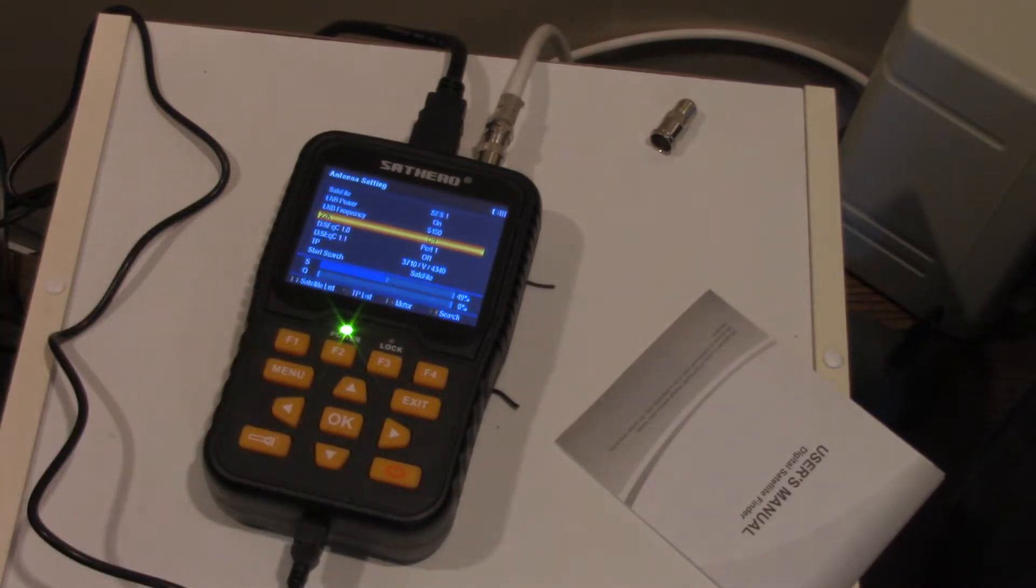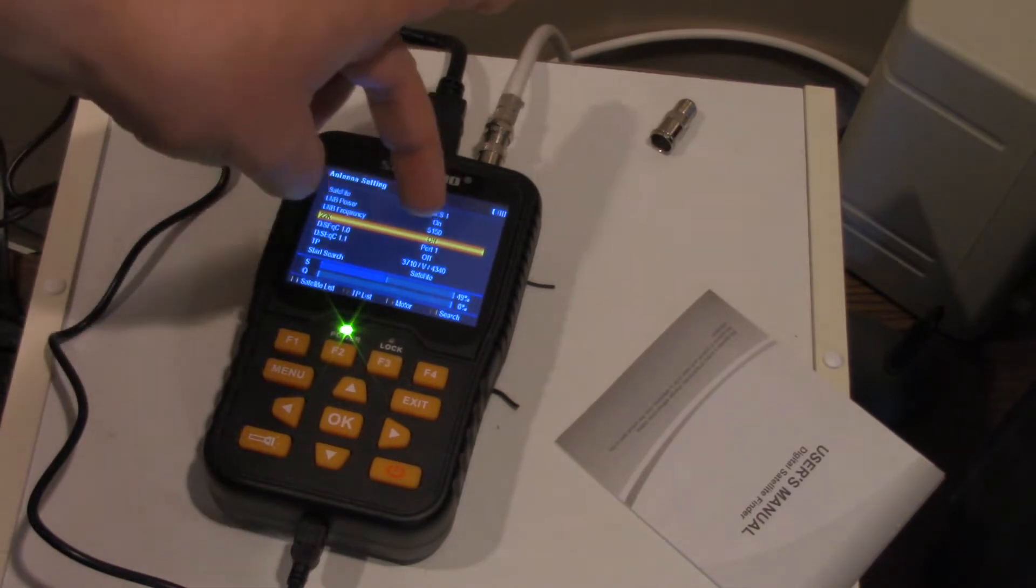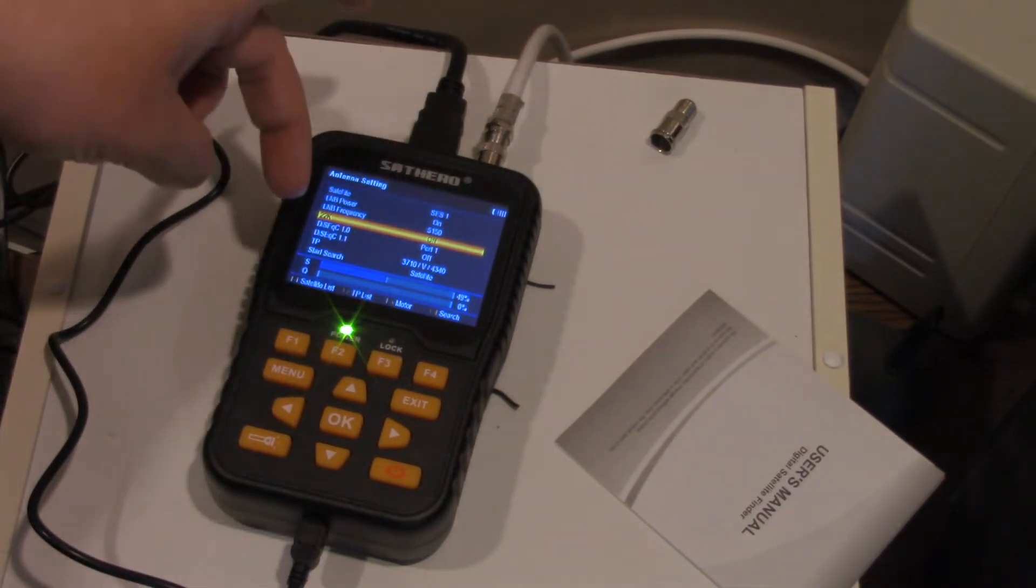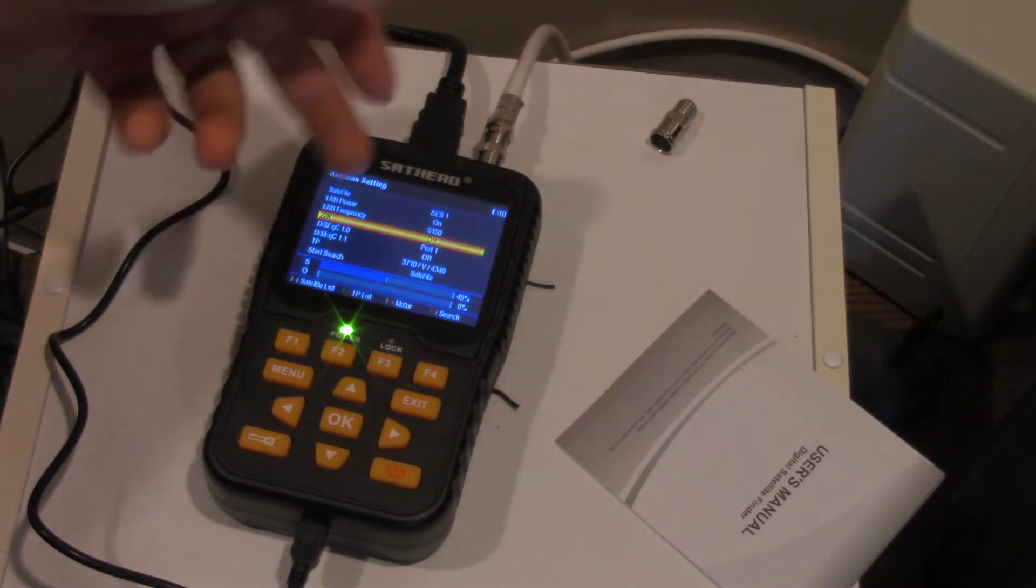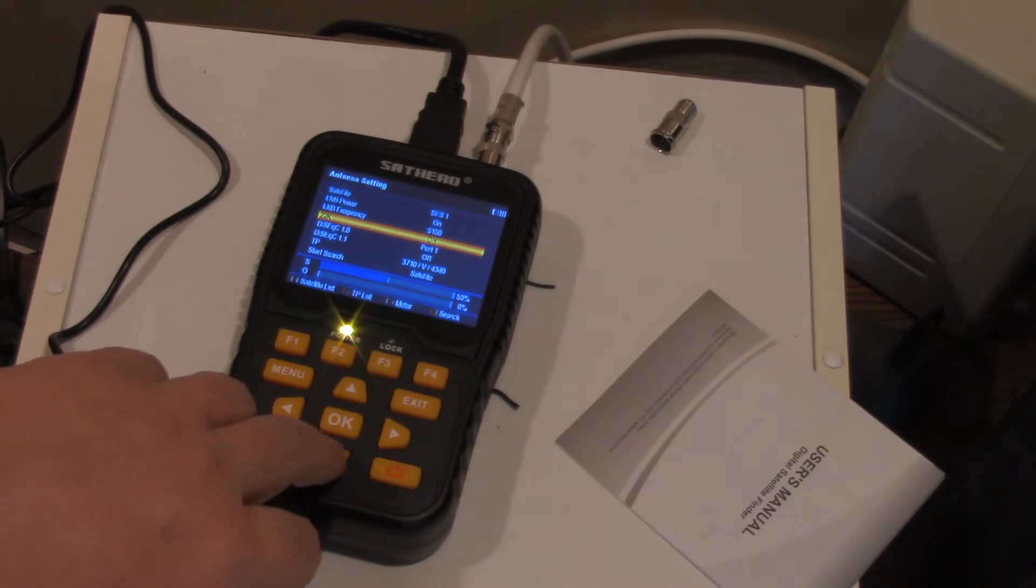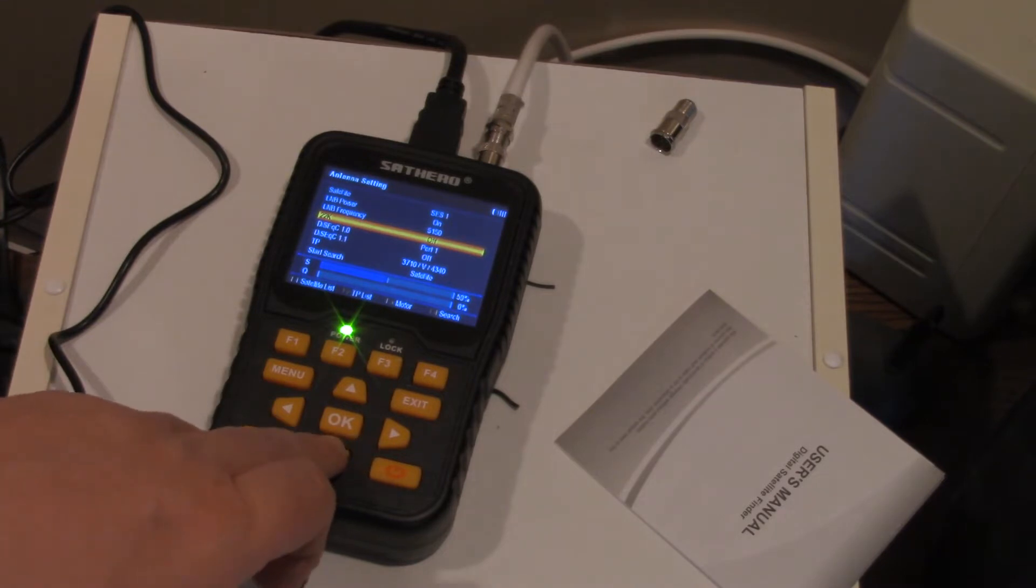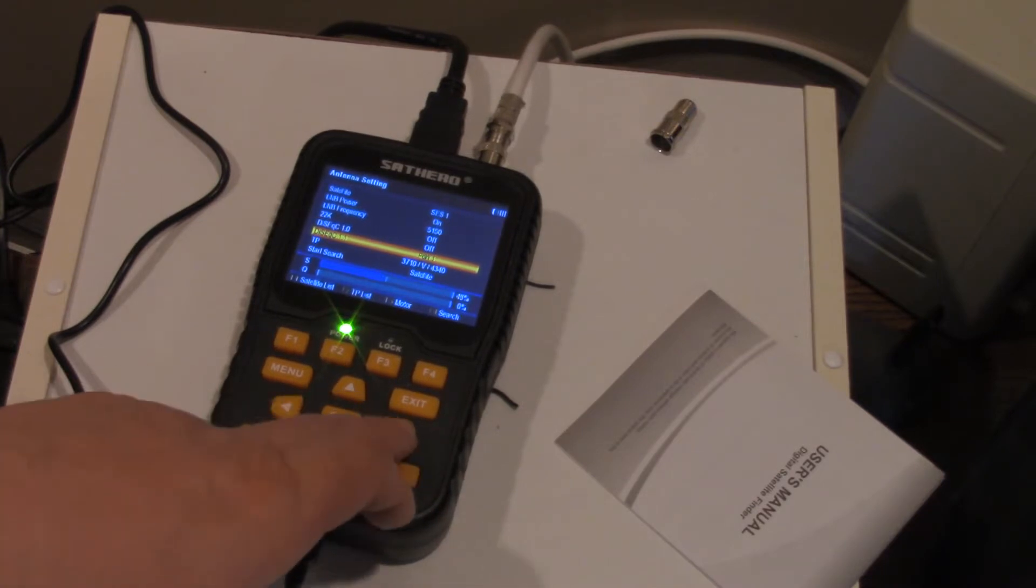22K. Now, I have a CKU LNB, so I have a 22K switch. If I want to get KU-band, I have that on. If I want to have the C-band part of the switch, I just have it off. So in this instance, you just leave that off, just the way you have it set up. Some LNBs have a 22K switch built into it for switching to different frequencies if it's like a multi-LNB.